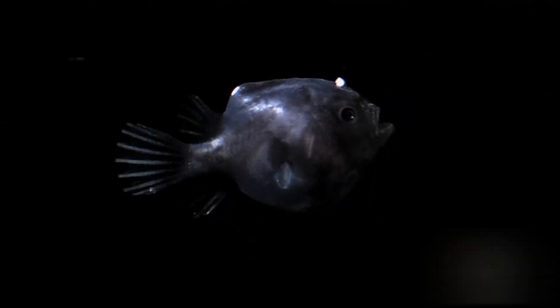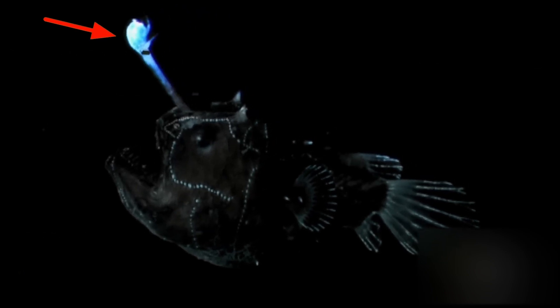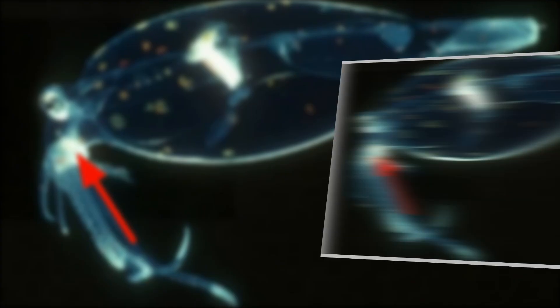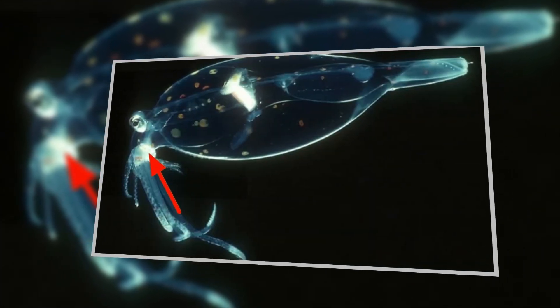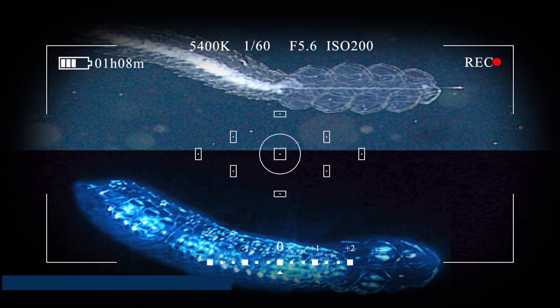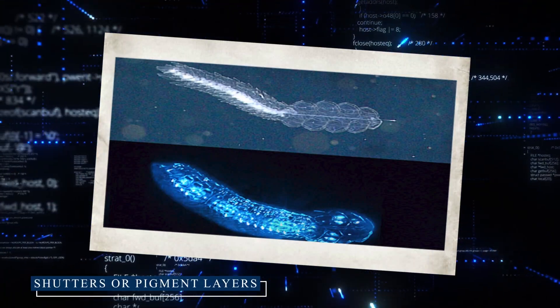Some creatures, like the anglerfish, have a single large light organ used as a lure. The complexity of these light organs is truly remarkable. Some have reflective layers to direct the light outward, while others have lens-like structures to focus the light. Some even have shutters or pigment layers that can be used to control when and how much light is emitted.